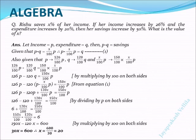Next step, also given that p increases by 26 percentage, that means 126 by 100 p. Similarly q increases by 20 percent, that means 120 by 100 q, and the savings becomes 150 percentage of x by 100 p, means 150 by 100 into x by 100 p.